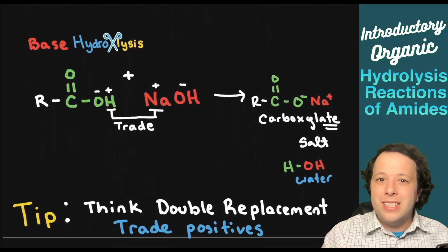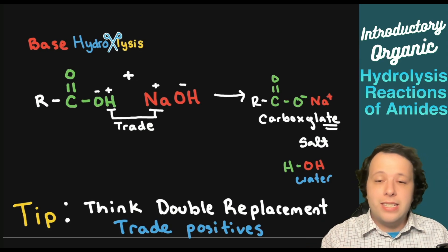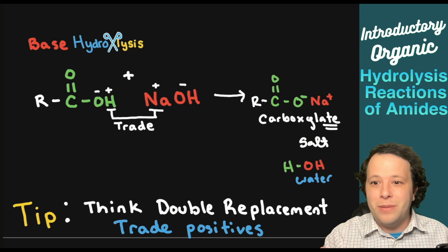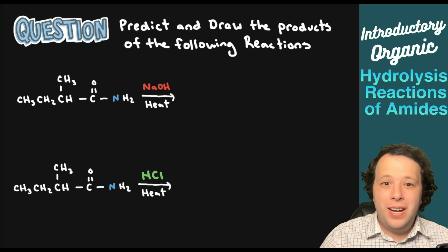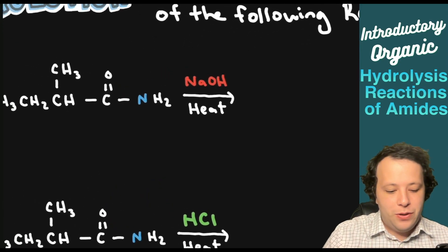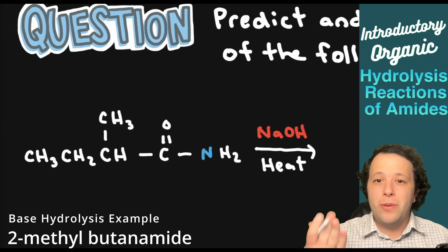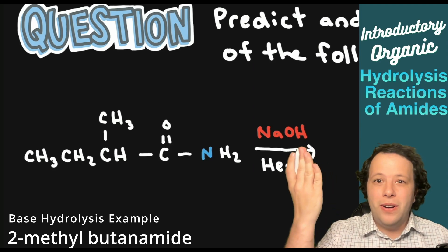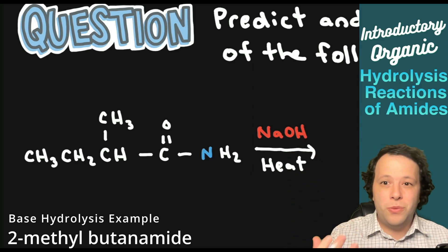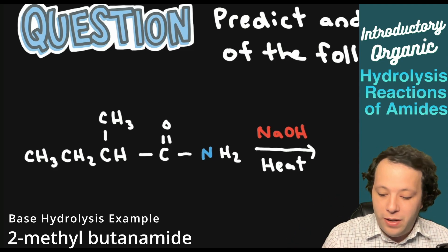All right, so that's the general idea. Let's go through some practice problems and put this to the test — we'll do both examples so you get plenty of practice. On the following problem we are going to be predicting and drawing the products for the following reactions. On this first problem we can see we have an amide, so we're going to be going through hydrolysis. We see the heating condition and we also see that sodium hydroxide is being added.